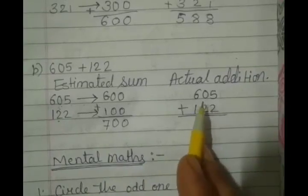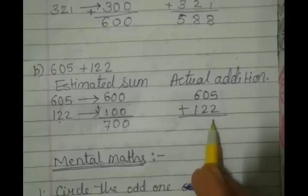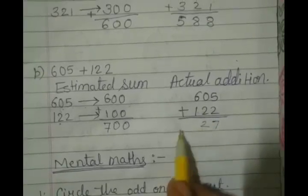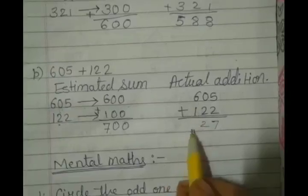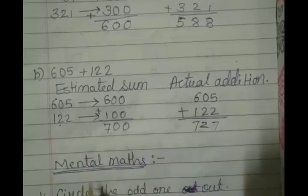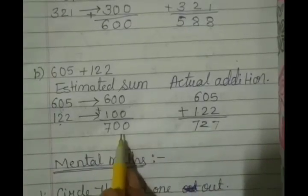Now here, actual addition. 5 plus 2, 7. 0 plus 2, 2 and 6 plus 1, 7. So 727, which is nearby 700.